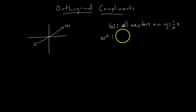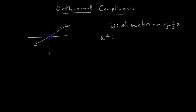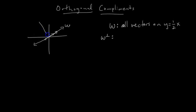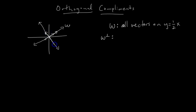W perp is another subspace which contains all vectors that are orthogonal to the vectors in W. Geometrically, W contains vectors along this line, and the collection of all vectors orthogonal to those would be the line perpendicular to y equals one-half x. Any vector on that perpendicular line is orthogonal to all vectors in W. So the first line I drew was W, and the second line is W perp.